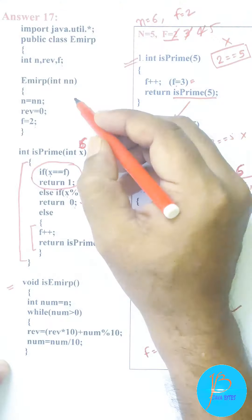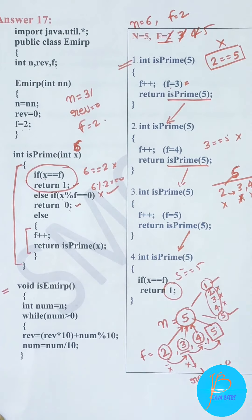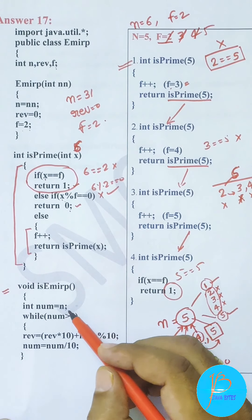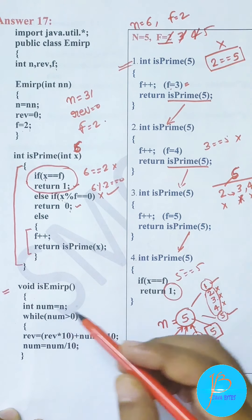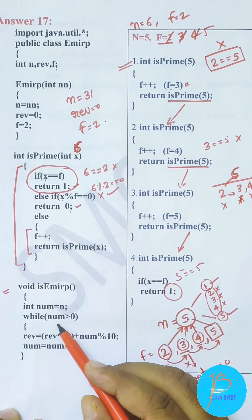Now in the isEmirp function: reverse becomes 0, f becomes 2. Then we call e.isEmirp(). Inside isEmirp, we first make a copy: num = n. Then using a while loop while num > 0, we compute: reverse = reverse * 10 + num % 10, and num = num / 10. This extracts digits and builds the reverse.